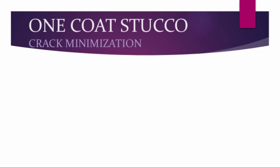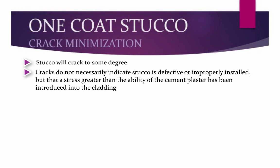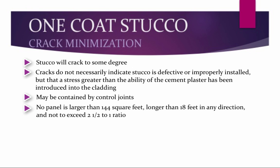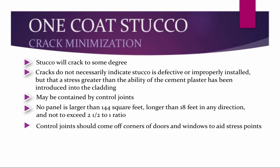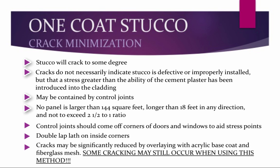There are ways to minimize cracks in stucco. Stucco will crack to some degree — cracks do not necessarily indicate stucco is defective or improperly installed, but that a stress greater than the ability of the cement plaster has been introduced into the cladding. Cracks may be contained by control joints to the panels where they reside. No panels should be larger than 144 square feet, longer than 18 feet in any direction, and should not exceed a 2.5 to 1 ratio. Control joints should come off corners of windows and doors vertically to aid in stress points. You may double-lap lath on inside corners, and cracks may be significantly reduced by overlaying with an acrylic base coat and fiberglass mesh, though some cracking may still occur.